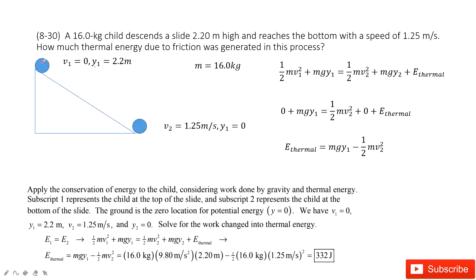And finally, this child moves to position Y2, which is 0. The final velocity is given, and the position is just 0. The child's mass is also given. So we need to find the thermal energy due to friction.